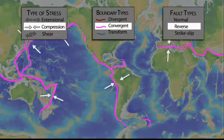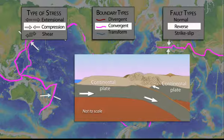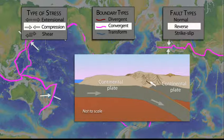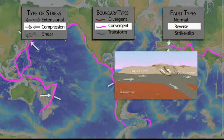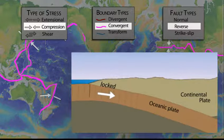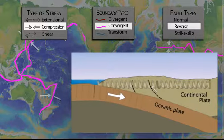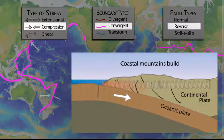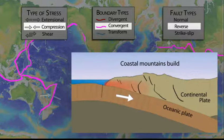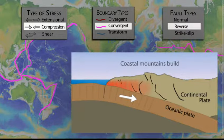Compressive stresses occur at convergent plate boundaries where two plates move toward each other. If two continental plates collide, they produce a broad uplift like the Himalaya mountain ranges, with reverse faults parallel to the plate boundary. If an oceanic plate subducts beneath a continental plate, most of the faults occur within the overlying plate as it is compressed and buckles, forming coastal mountain ranges parallel to the plate boundary. The sloping contact between the plates is under high friction as the subducting plate shoves the overlying plate backwards.